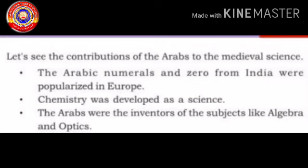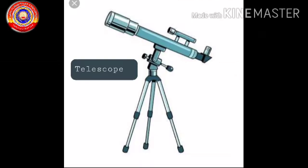Arab contributions to medieval science include: Arabic numerals and zero, originally from India, were popularized in Europe. Chemistry was developed as a science. The Arabs were the inventors of subjects like algebra and optics. The Europeans got acquainted with technological know-how through their Arab contact.